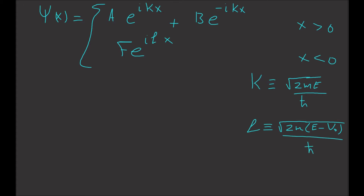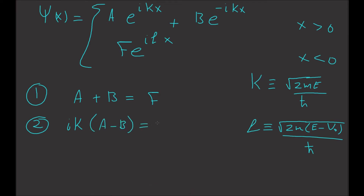The first boundary condition tells us that psi is continuous at X equals zero, giving us A plus B equals F. The second boundary condition states that the derivative is also continuous, giving us iK(A minus B) equals iL·F.